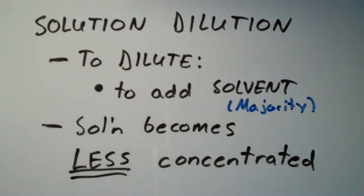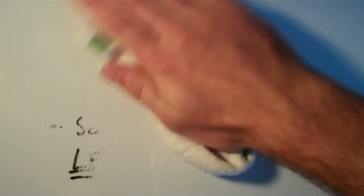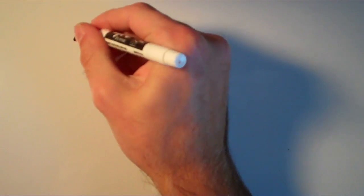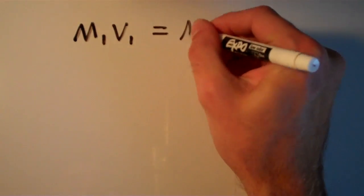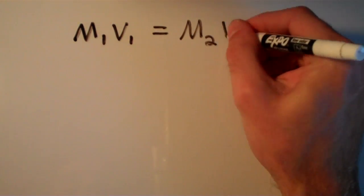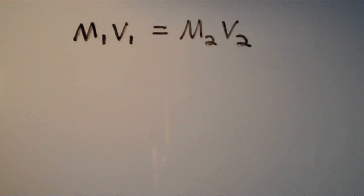So there's a pretty easy way to quantify solution dilution. And in general, the following equation is used: M1 V1 equals M2 V2.